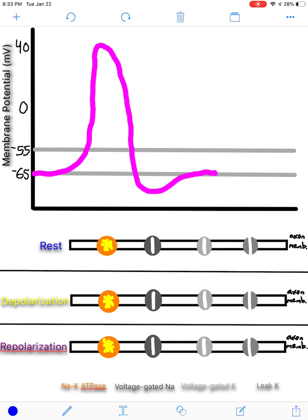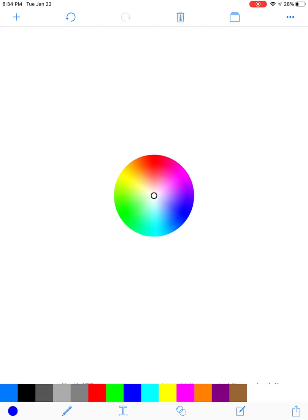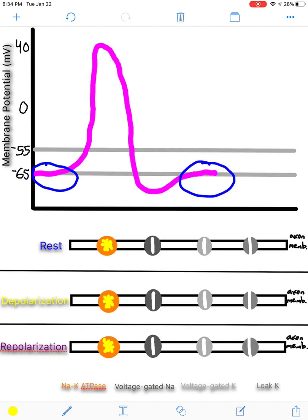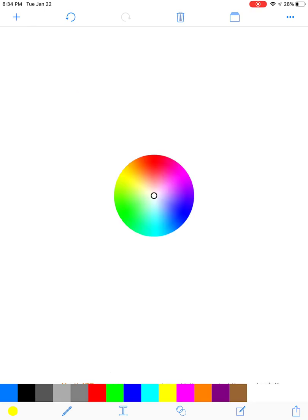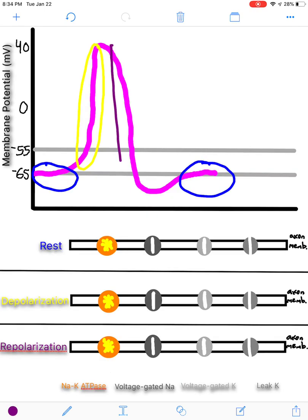So we're going to start with at rest, and rest is indicated by these two flat parts. Then you're going to have depolarization, which is indicated by this rising phase. And you're going to have repolarization, which is indicated by that falling phase.